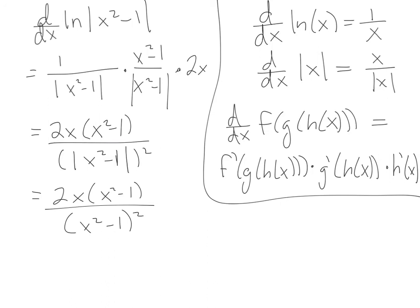And now is the step that feels a little bit like cheating, because since we got rid of that absolute value, now you'll notice that we have an x squared minus 1 on top, and a couple of x squared minus 1's on the bottom. So we can cancel out our x squared minus 1 on top, and one of the x squared minus 1's on the bottom, leaving us with 2x over the quantity x squared minus 1.